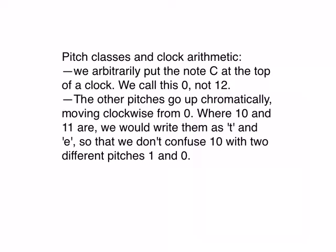The other pitches will go up chromatically, moving clockwise from 0. And where 10 and 11 are, we'll write them as T and E, because we don't want to confuse that, which could either be 10 or could be pitch class 1 and pitch class 0. So therefore, we write T when we want 10, and we'll write E where we want 11.